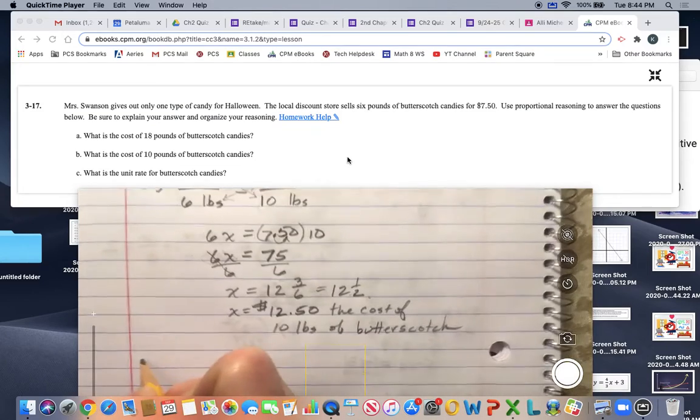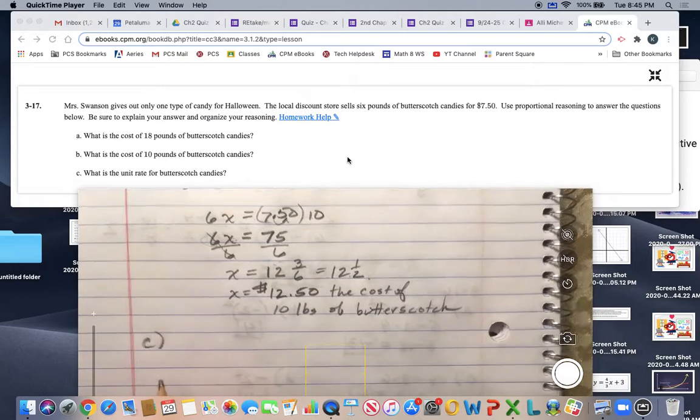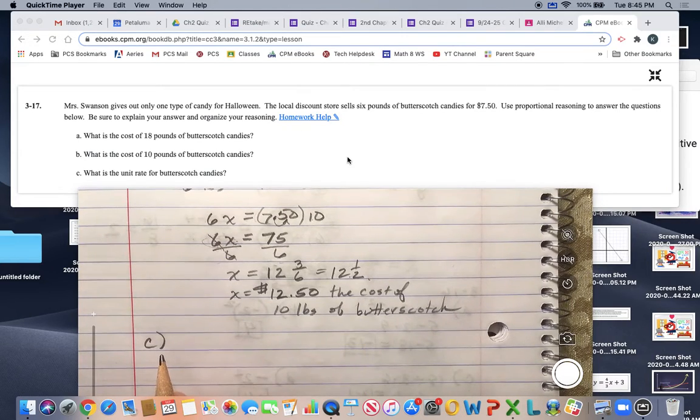Problem 3-17, and we're going to do the last part of the problem, which is C. What is the unit rate for butterscotch candies?